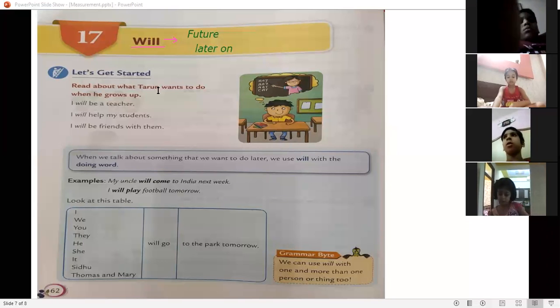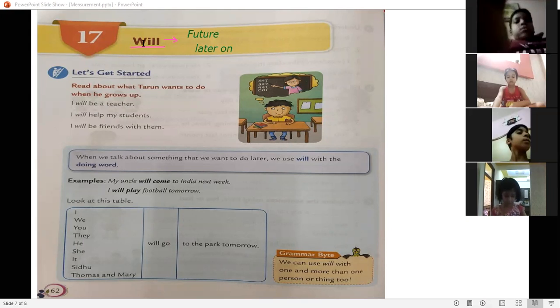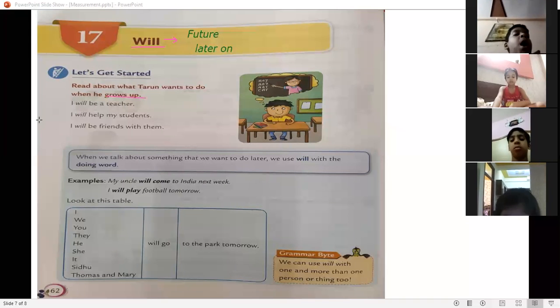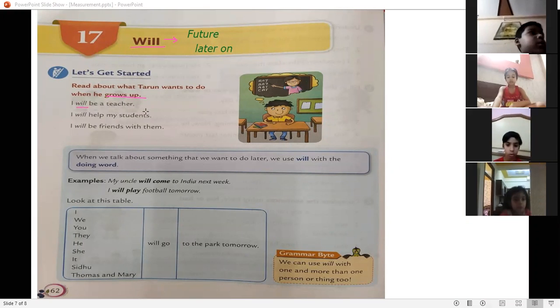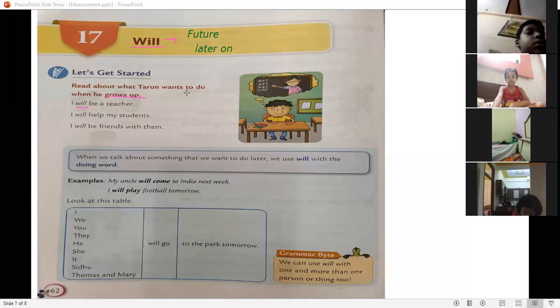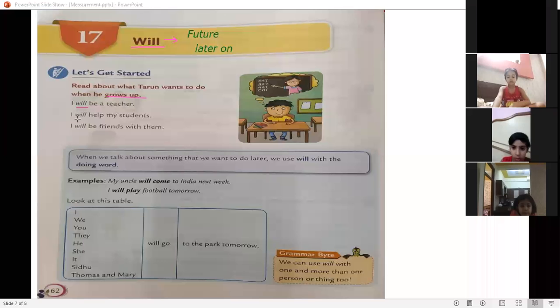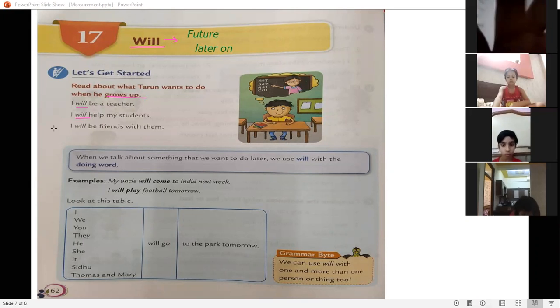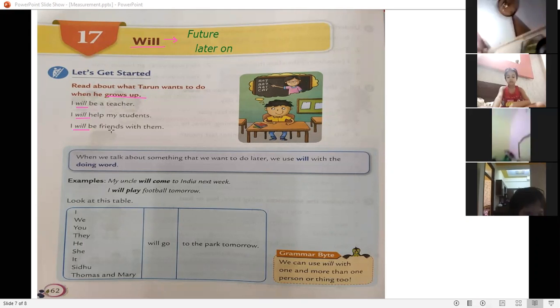Let's start. Read about what Tarun wants to do when he grows up. Jab woh Tarun bada ho jayega. See, he's Tarun. Jab Tarun bada ho jayega, to Tarun ko kya karna hai? I will be a teacher. Main teacher banun ga. Means future mein ho ga na, baad mein teacher banun ga. Jab bada ho jayega, to I will. I will help my students. Main apne students ki help karun ga. I will be friends with them. Main apne students ka friend bhi banun ga.